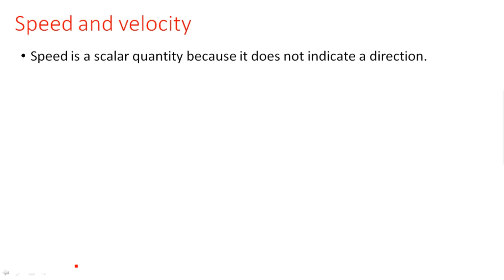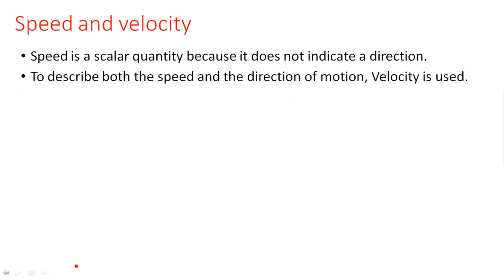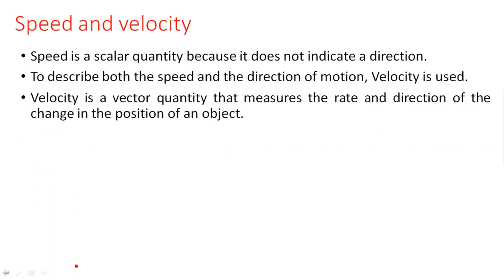First, let us go to the definition of speed and velocity. Speed is a scalar quantity because it does not indicate a direction — it simply has magnitude and no direction. To describe both the speed and the direction of motion, velocity is used. Velocity is a vector quantity having both magnitude and direction.